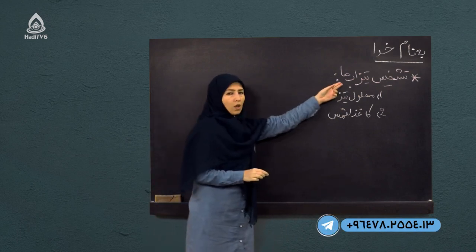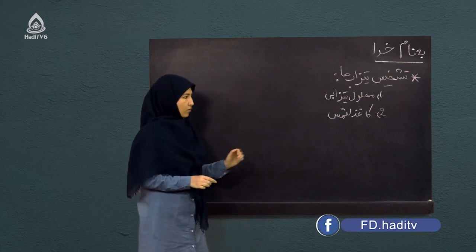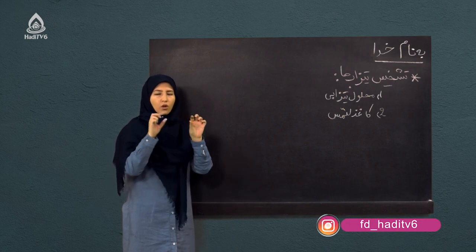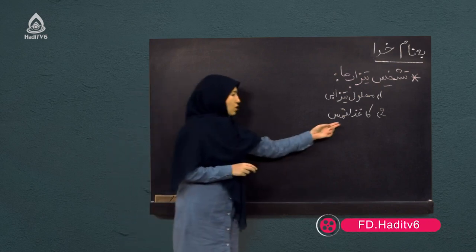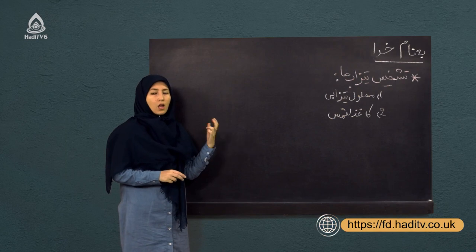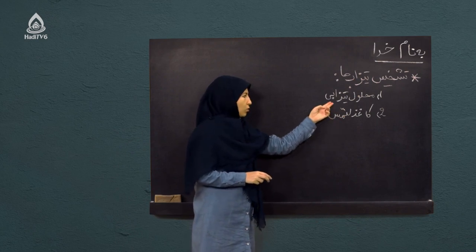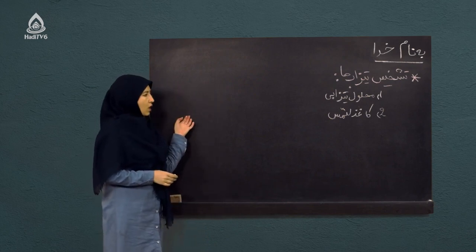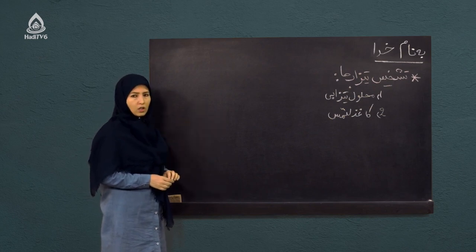برای اینکه تضاب‌ها را در محیط لبراتواری تشخیص بدیم به محلول تضابی و کاغذ لیتموس نیاز داریم. کاغذ لیتموس چیست؟ کاغذهای لیتموس در محیط‌های لبراتواری نوار‌های باریک و مستطیل شکل هستند. ما کاغذهای لیتموس را به داخل محلول‌های تضابی یا القلی آغشته می‌کنیم و از روی تغییر رنگی که بر روی کاغذ لیتموس ایجاد می‌شود تشخیص می‌دهیم که محلول مورد نظر تضابی است یا القلی.